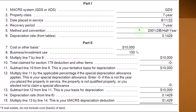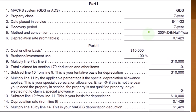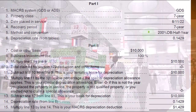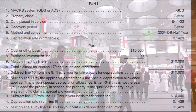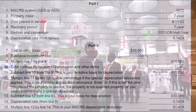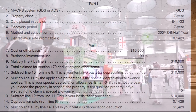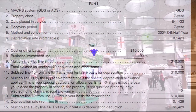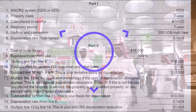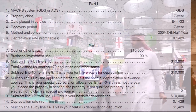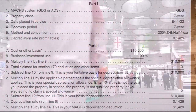We know that's the case because that's the default if we're using GDS for seven-year property, unless we elect to do something other than that, like a straight-line method. Half-year convention is the default unless we purchased a bunch of stuff at the end of the year, in which case they might force us to do a mid-quarter convention. So the depreciation rate is 0.1429 from the table.